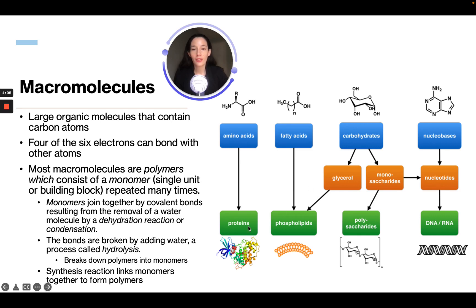These are different types of macromolecules. You have amino acids and proteins, fatty acids which are broken down to phospholipids, carbohydrates which can get broken down to glycerol or monosaccharides, and nucleobases which are your RNA and DNA.